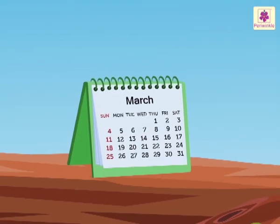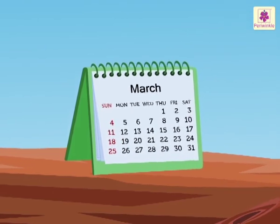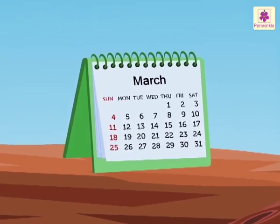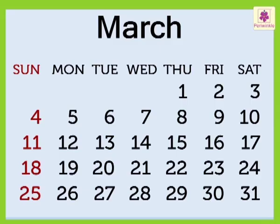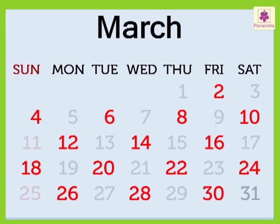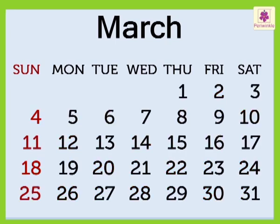Now, let us look at our school calendar and see if we can identify the even and odd numbers. All numbers with the digits 0, 2, 4, 6, or 8 in the 1's place are called even numbers. Hey! We have correctly identified the even numbers.